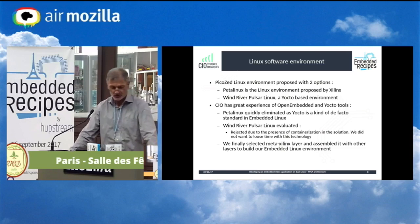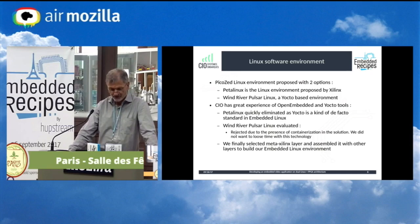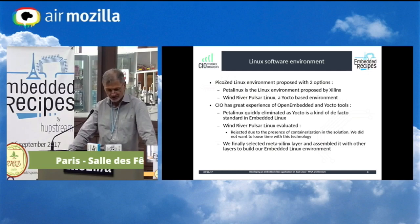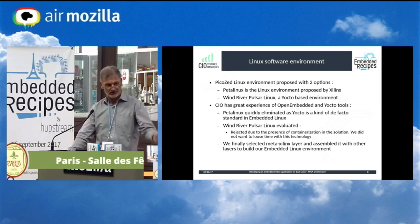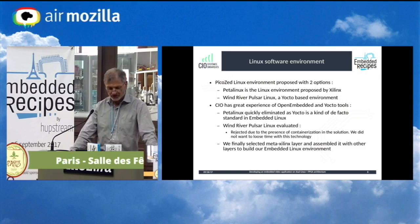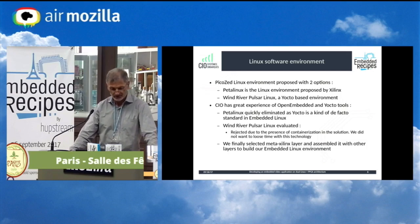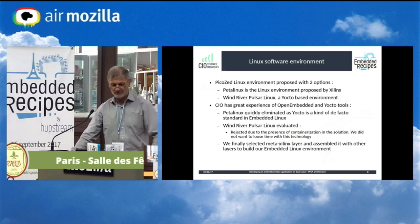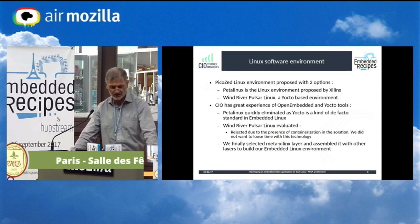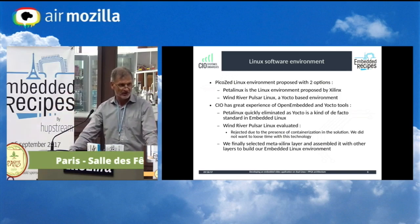Because we have great experience with embedded Linux, OpenEmbedded, and Yocto, we didn't want to go into a new build system like PetaLinux, even if it is well-documented on the Xilinx wiki. Wind River Pulsar Linux is Yocto-based so we evaluated it, but we didn't go in that direction either, because in the Wind River Pulsar Linux layers there is a containerization solution that seemed difficult to ignore. So, to avoid losing time on the build system, we decided to assemble all the Yocto layers ourselves, basing development on the meta-xilinx layer — which is roughly the board support package for the PicoZed ecosystem.